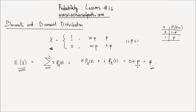If you pass an exam, that's a success; if you fail, that's a failure. The probability of passing is p, and the probability of failing is 1 minus p. Therefore, the probability of success is equal to the expected value of the random variable x.